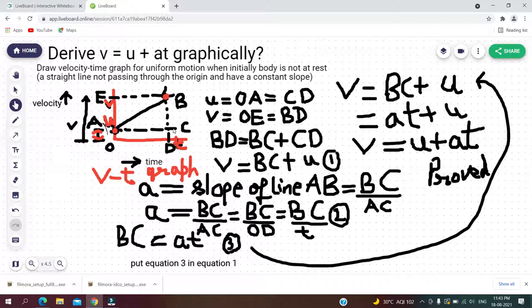Okay, now how to derive this relation? We have drawn our velocity-time graph, so we can say that as OA is parallel to CD, if OA is equal to u, CD will also be equal to u.